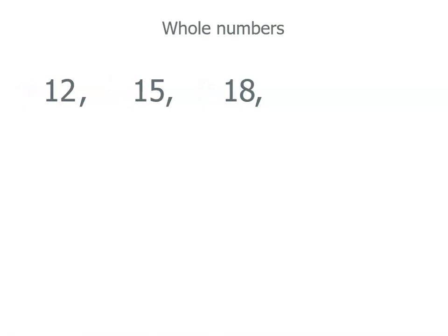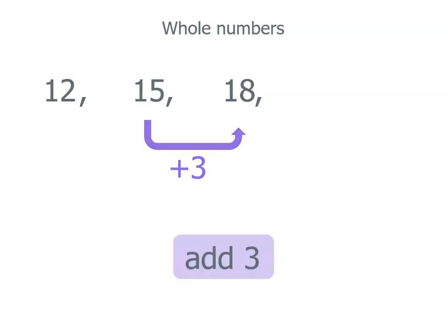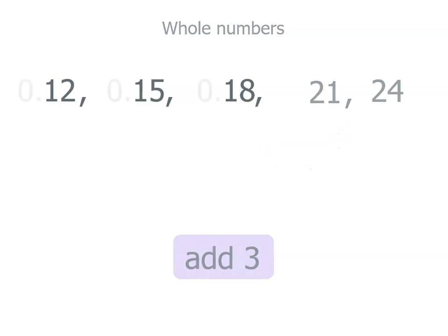Now we've actually got whole numbers. And if you look, you can see that we add 3 to 12 to get 15. Then we add 3 again to get 18. So our pattern is to add 3 to the last number to get the next number: 21, 24. So what we want to do is be able to say these numbers so we can hear what they actually represent.